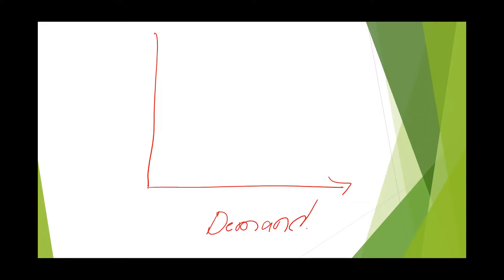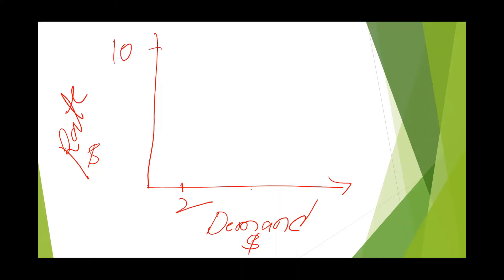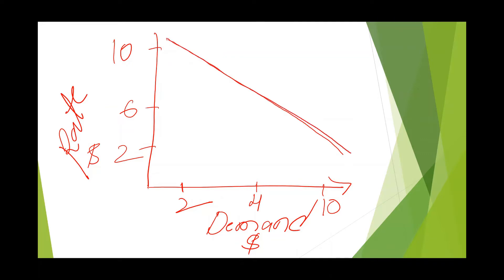Let us understand this with an example by plotting graphically. Let the X-axis be the demand of a foreign currency, say dollar, and the Y-axis be the rate of the foreign currency, say dollar. As per the law of demand, when everything is kept constant, when demand increases the price decreases, so the demand curve will always slope downward. For example, at a quantity demanded of two, the price will be ten; if demand increases to four, price reduces to six; if it further increases to ten, price comes down to two.